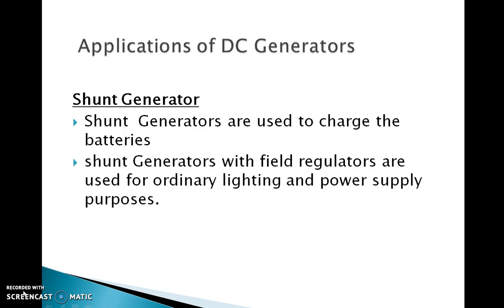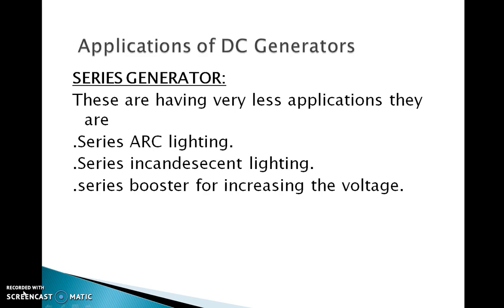Shunt generators with field regulators are also used for general power supply purposes. Series generators are not used for power supply because of their rising characteristics. However, their rising characteristics make them suitable as boosters in certain types of distribution systems, particularly in railway service. They are also used in series arc lighting, series incandescent lighting, and as series boosters for increasing voltage.